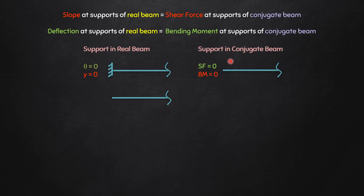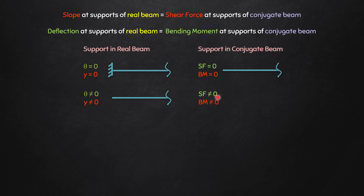For a free end in a real beam, slope is not zero and deflection is not zero, since a free end can have both. So in the conjugate beam, shear force should not be zero and bending moment should not be zero either. That support is a fixed support. Therefore, if you have a free end in a real beam, the conjugate beam at that point will have a fixed support.